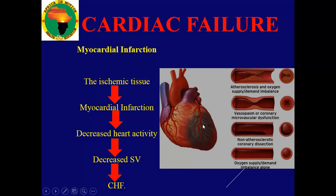Myocardial infarction starts with ischemia, then the affected tissue becomes dark and necrotic. A normal vessel becomes narrowed by an atheroma — a plaque that decreases the lumen — or cholesterol deposits form a layer blocking the passage. That section of heart muscle dies, causing a heart attack, which can lead to cardiac heart failure.